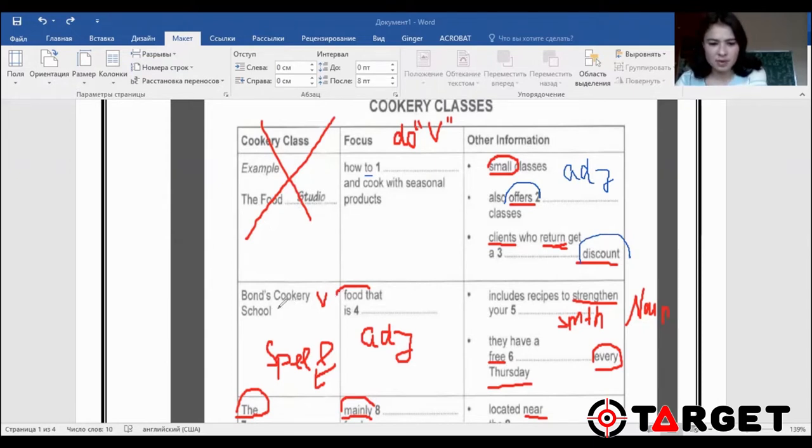Next, Bones Cookery School. Food that is, we have here is, and we have noun. So logically here is going to be an adjective. What kind of food? What kind of food may be vegetarian? Number five, includes recipes to strengthen your something. So strengthen your something, it's going to be a noun. Strengthen is a keyword here. These words that I have underlined, they usually will have a paraphrase in the track.